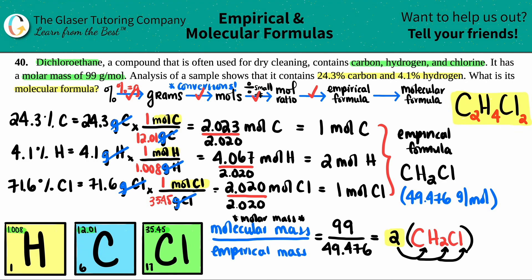That's it! Remember 'di' means two — we learned that when we did naming. So dichloro means two chlorines, and it checks out. Let me know in the comments what you think. Give this video a thumbs up and subscribe to the channel if you'd like. Let's keep studying hard, keep learning empirical formulas and molecular formulas. I believe in you and I'll see you in the next lesson.